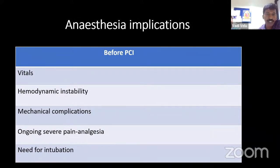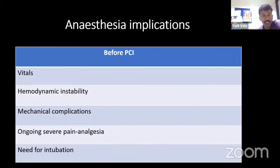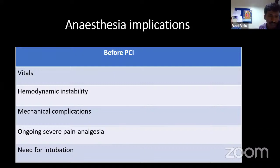What are the anesthesia implications? Before PCI, it is vital to monitor vitals because the first-degree AV block present may convert into a high-degree AV block, right-induced ventricular tachycardia, or torsades de pointes. This patient should be carefully handled for heart rate, blood pressure, saturation, and respiratory rate. Hemodynamic instability has to be monitored very intensely, and mechanical complications have to be assessed before PCI, during PCI, and after PCI, because mechanical complications can set in at any point of time.